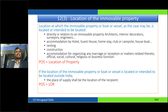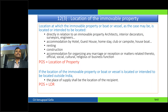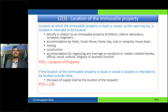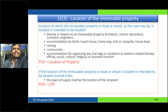The place of supply is Karnataka, but the location of the recipient is Delhi. These do not match, so the recipient in Delhi will not be able to enjoy this credit. This credit would be a loss because it belongs to the state of Karnataka and cannot be transferred to Delhi. So the input tax credit benefit would be lost to the person in Delhi.